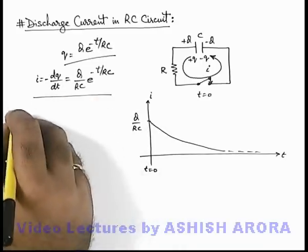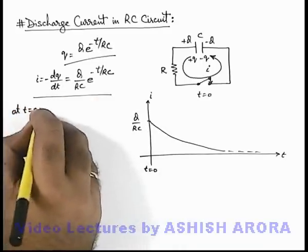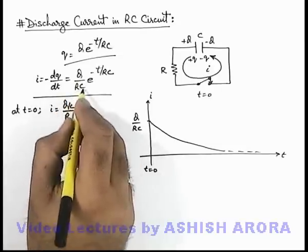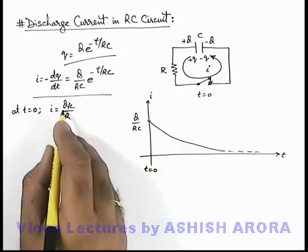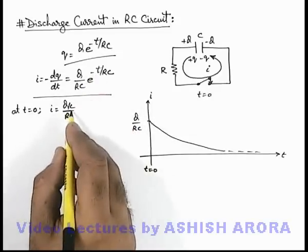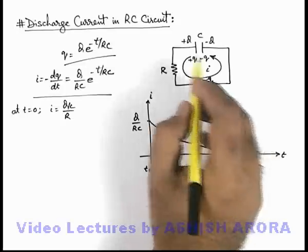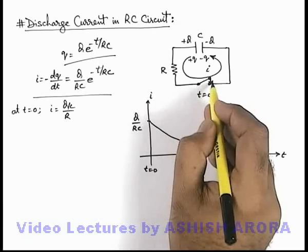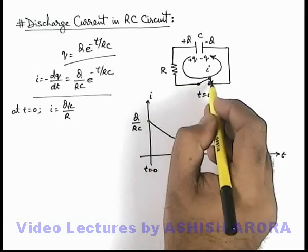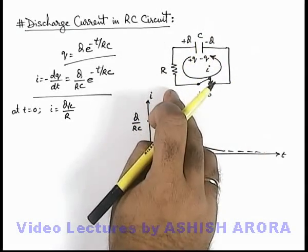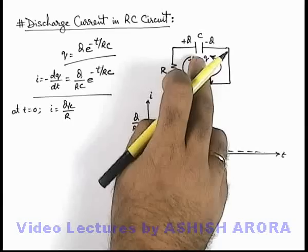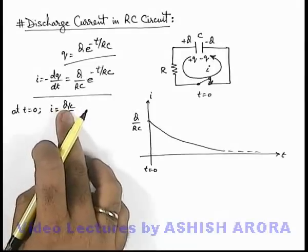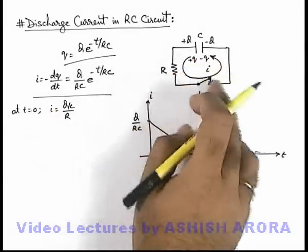At t equal to zero, the value of current is Q/C divided by R, which is Q/RC on substituting t equal to zero. This can be understood as: on closing the switch, the potential difference across the capacitor initially is Q/C, so the current flowing through the resistance is Q/C over R, because this potential difference is directly applied across the resistance. So we can say a charged capacitor behaves like a battery of EMF Q/C, due to which a current flows in the remaining circuit.